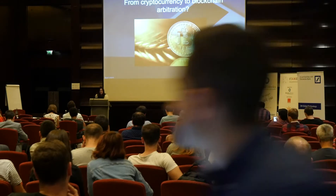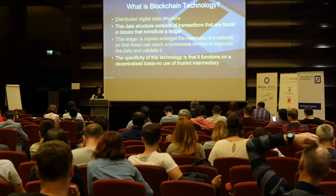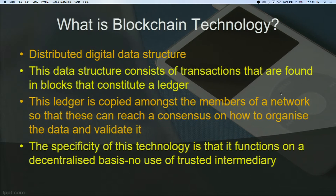For those not well aware of blockchain technology, in my legal analysis I tried to simplify the idea to explain it to a layperson. Blockchain technology is a distributed digital data structure consisting of transactions found in blocks that constitute a ledger. We have a block, it becomes part of a chain — blockchain — and this ledger is copied amongst the members of a network so they can reach a consensus on how to organize and validate the data.